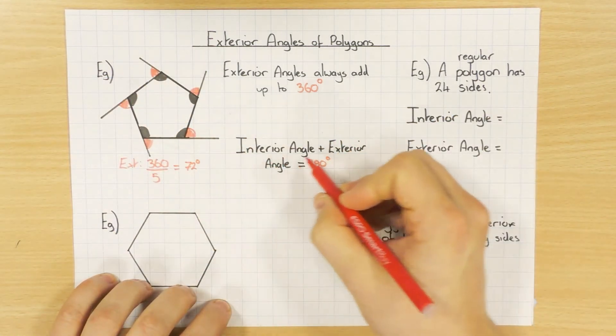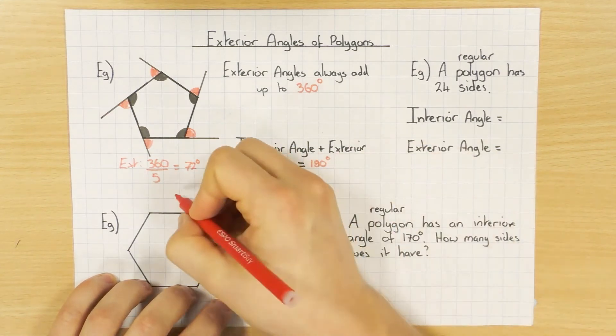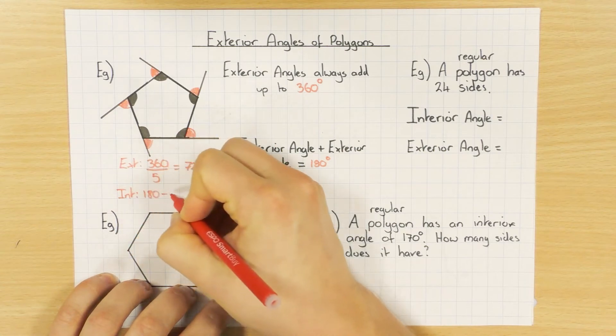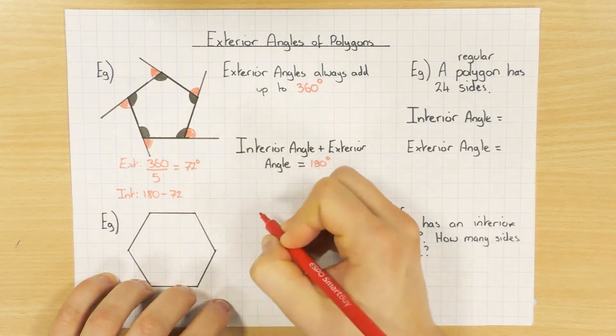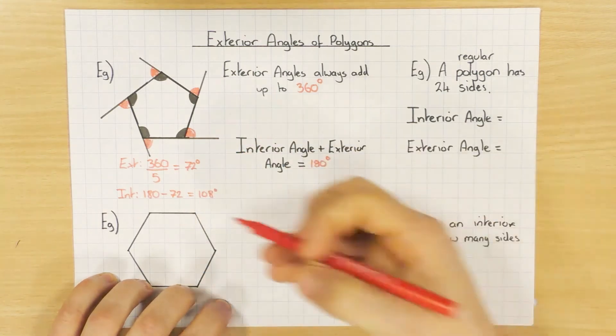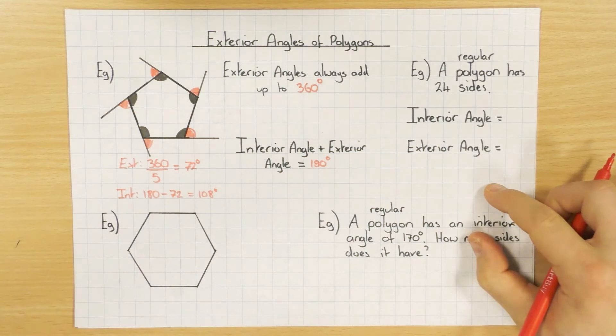Because I know that the interior and exterior angles add up to 180, if I wanted to work out the interior angle, I could just do 180 minus the exterior angle, which we just worked out was 72, and get it to be 108 degrees. So using the exterior angle rule, you could also work out the interior angle.